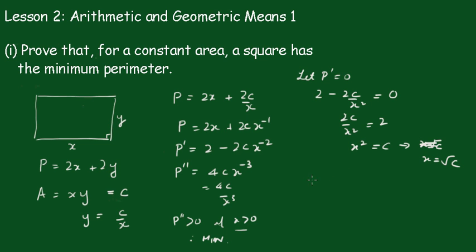Now putting that back in the equation here we get y equals c over root of c. Rationalize we get c root of c on c, which is root of c. So we have a square here.